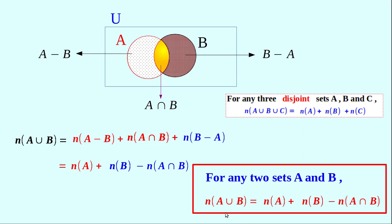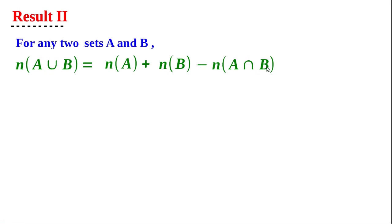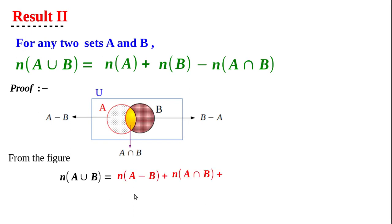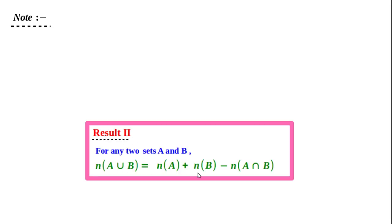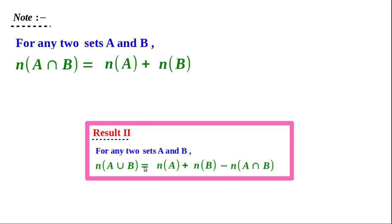Write Result 2 in your notebook: For any two sets A and B, n(A∪B) = n(A) + n(B) - n(A∩B). Draw the Venn diagram as proof. Suppose these two sets are disjoint — then n(A∩B) = 0, so n(A∪B) = n(A) + n(B), which is consistent. From Result 2, we also get: n(A∩B) = n(A) + n(B) - n(A∪B). That is also a very important result, so write it in your notebook.